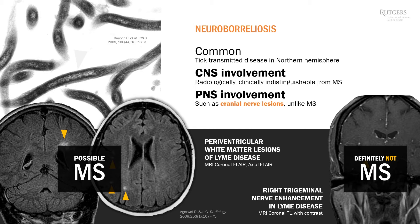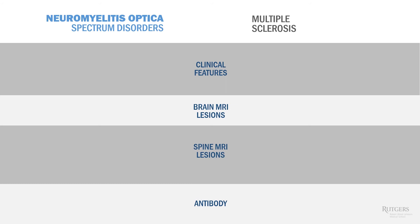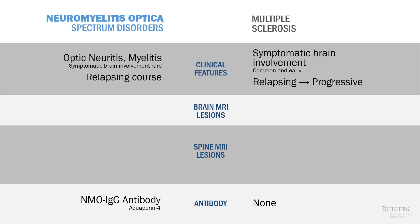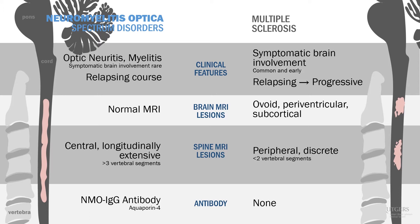Neuromyelitis optica spectrum disorder was not known 20 years ago — before, we called it Devic disease and considered it part of the MS spectrum. Researchers found that patients with certain clinical features have antibodies targeting aquaporin-4, a water channel abundant in the CNS. A whole new group of disorders emerged called neuromyelitis optica spectrum disorders. These patients commonly have optic neuritis and myelitis, but with slightly different clinical features and MRI appearance. Most of these patients have antibodies to aquaporin-4, making it a true autoimmune disorder — in contrast to MS, where the cause is unknown.